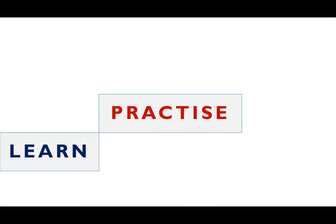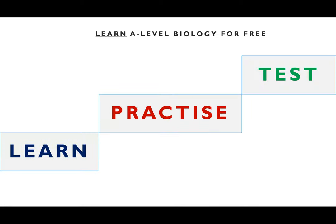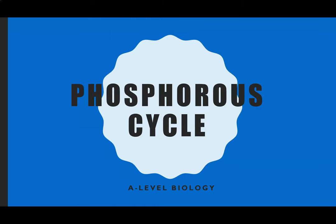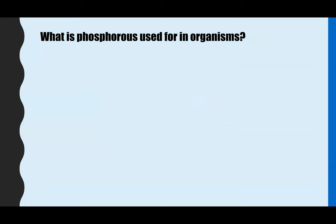Hi everyone and welcome to Learn A-Level Biology for free with Ms Estrich. In this video we're going through the nutrient cycle — the phosphorus cycle. The first thing to think about is what phosphorus is used for in organisms, to help understand why this cycle is so important.